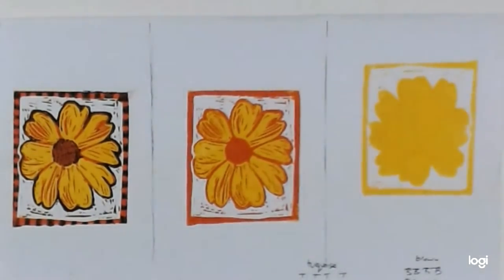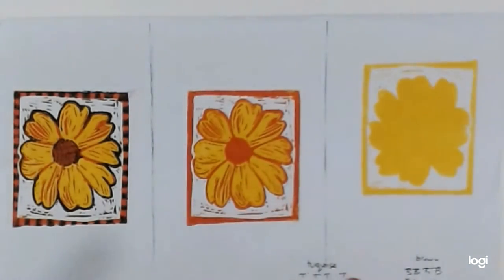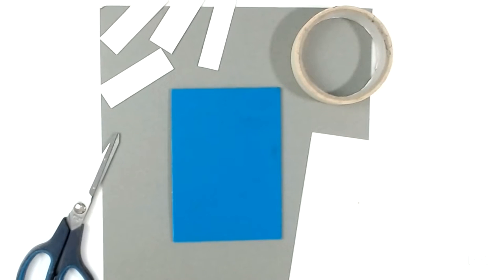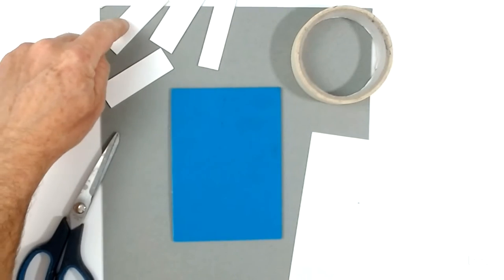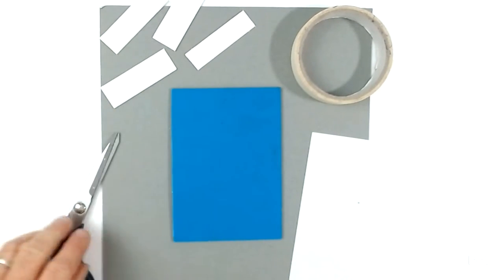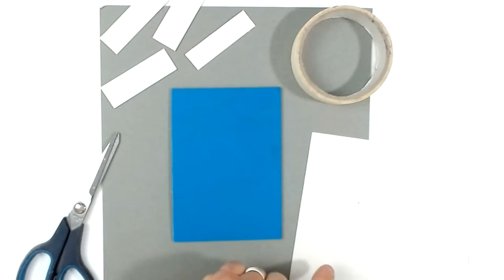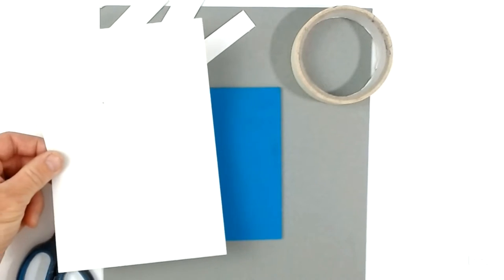But the first thing we need to do is make something called a registration plate which will help us make sure that when we print the second time or the third time over our original print we get it in exactly the right place. To make a registration plate we need a piece of card for the background, four carefully cut strips of card cut very straight, the lino we're going to use, and the paper we're going to print on which should be bigger than the piece of lino. I prefer about twice as big.